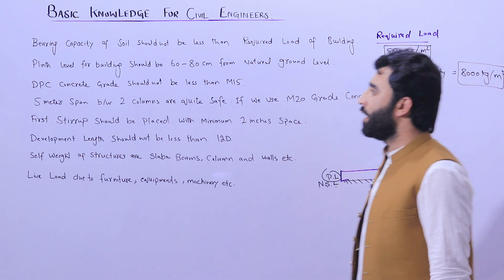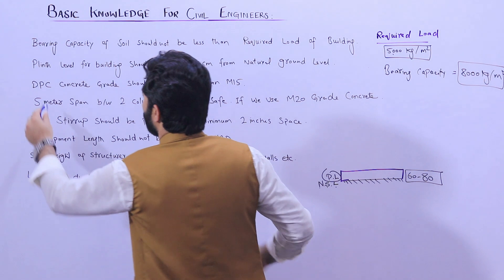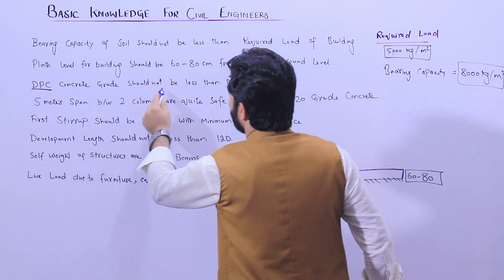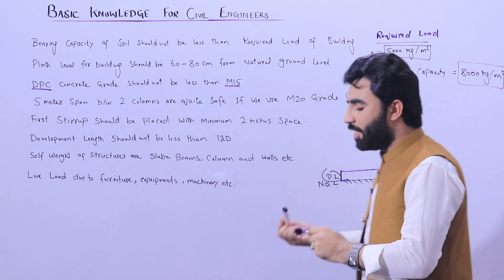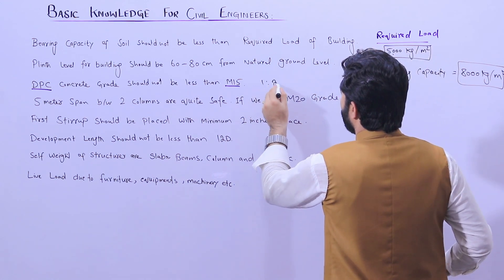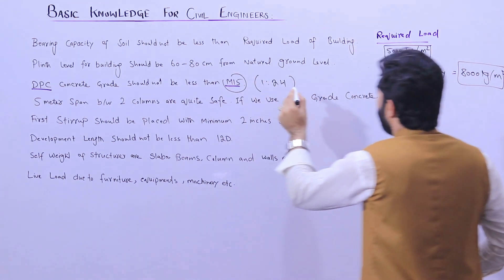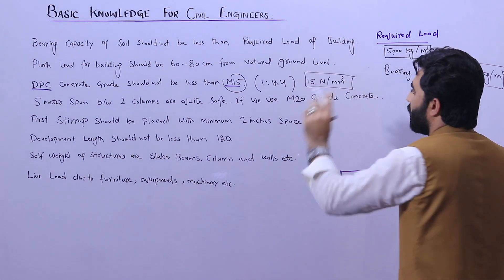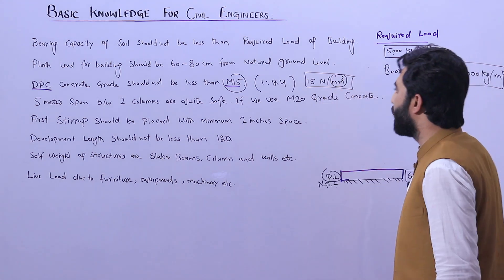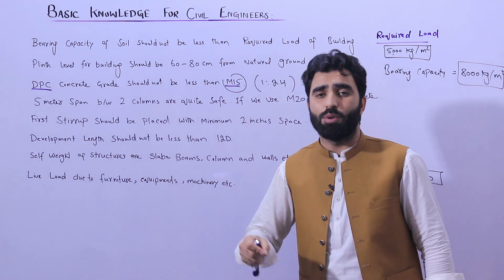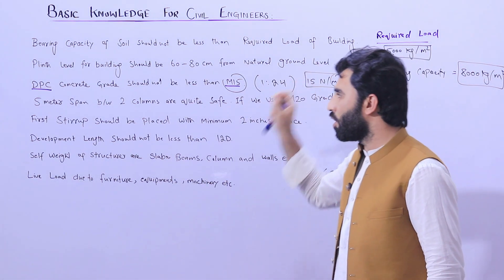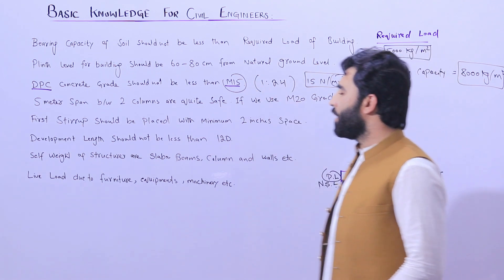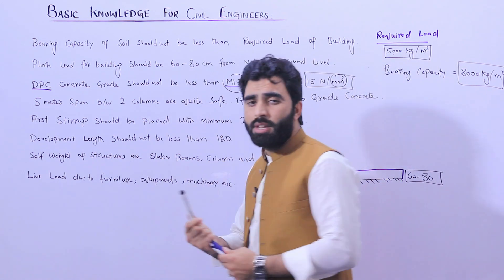The next topic is DPC — Damp Proof Course — which we provide on top of brick masonry or on top of the plinth level. The DPC concrete grade should not be less than M15 grade concrete. M15 grade concrete has a ratio of 1:2:4. M15 means the compressive strength is 15 Newton per mm². If you are using M20, it means 20 Newton per mm². For normal DPC, you can use M15 grade.